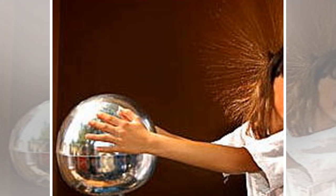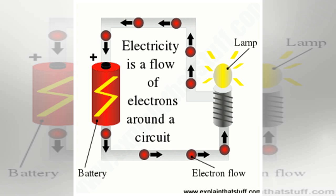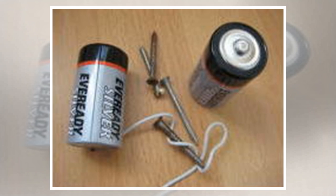Current electricity: When electrons move, they carry electrical energy from one place to another. This is called current electricity or an electric current. A lightning bolt is one example of an electric current, although it does not last very long. Electric currents are also involved in powering all the electrical appliances that you use, from washing machines to flashlights and from telephones to MP3 players. These electric currents last much longer.